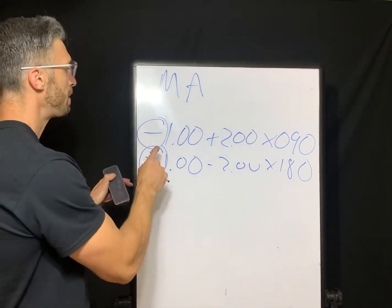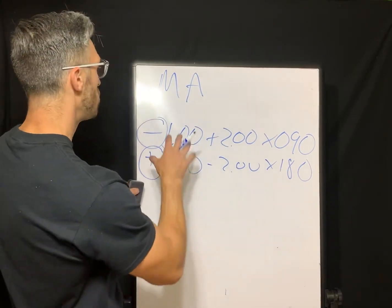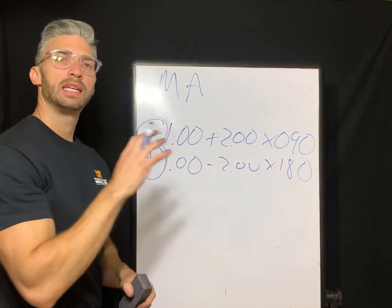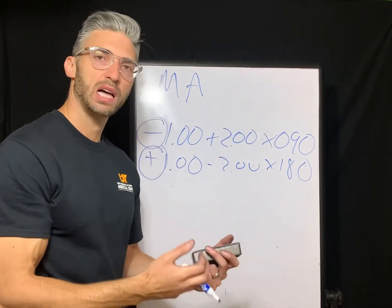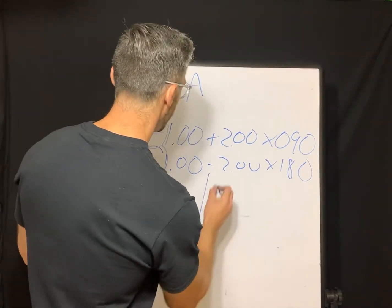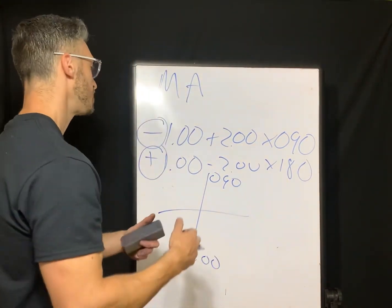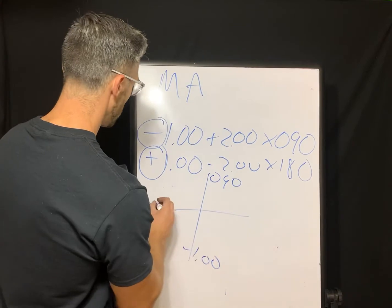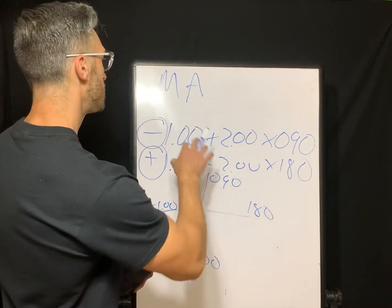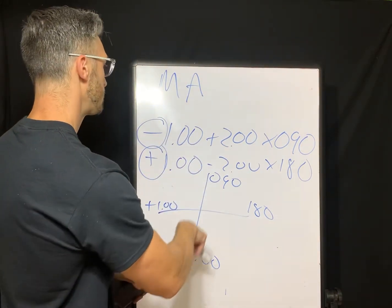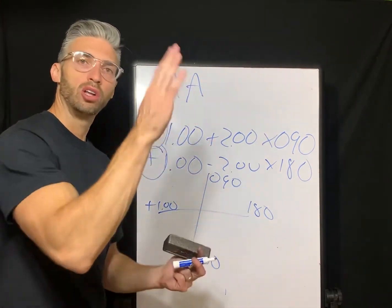We have minus one at 90 and plus one at 180. We need more minus power in the 90-degree meridian because it's neutralizing the plus power of the cornea. A minus one is more minus than a plus one along 180, so this prescription is with-the-rule astigmatism — that minus one is counteracting the steep cornea encountered along the vertical meridian.